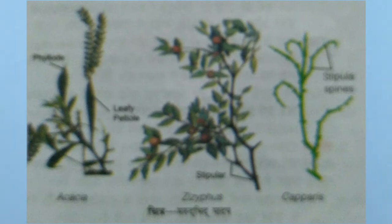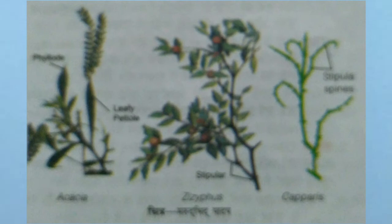Examples of xerophytic (jirophytic) plants are given here. These are drought-resistant plants. Examples include Acacia, Ziziphus (Jigiphos), and Capparis (Cap Paris) — examples of xerophytic plants.